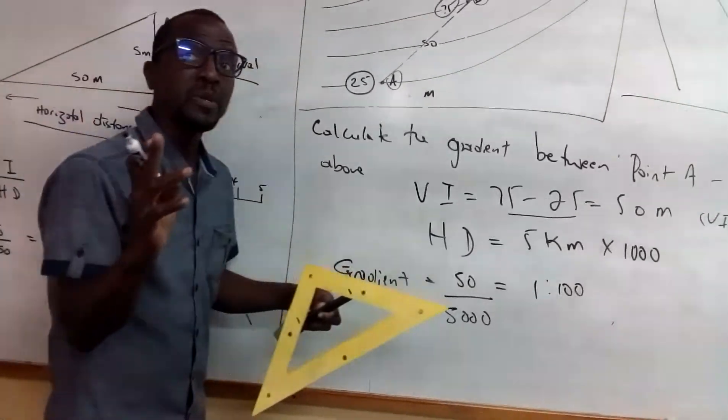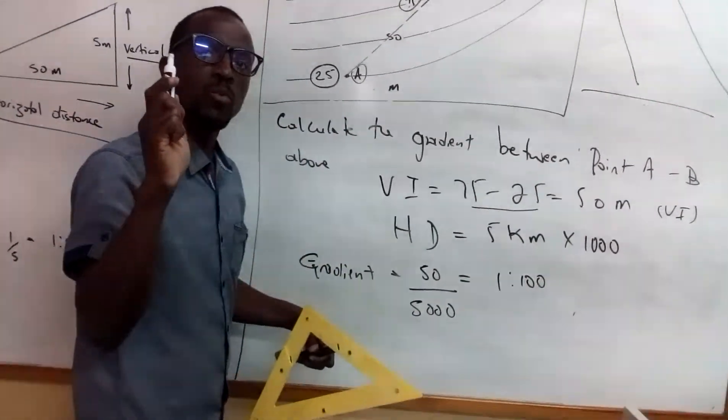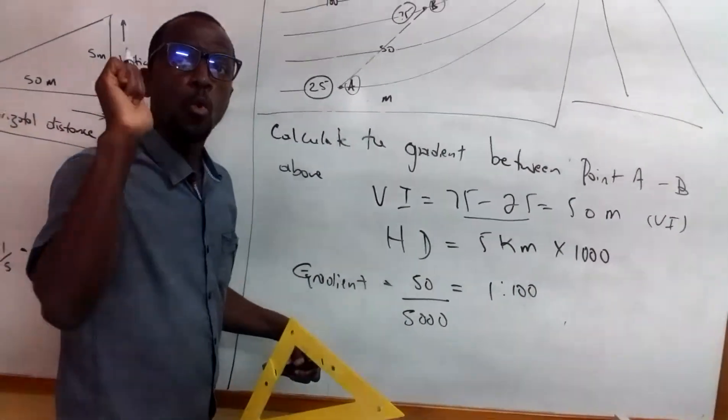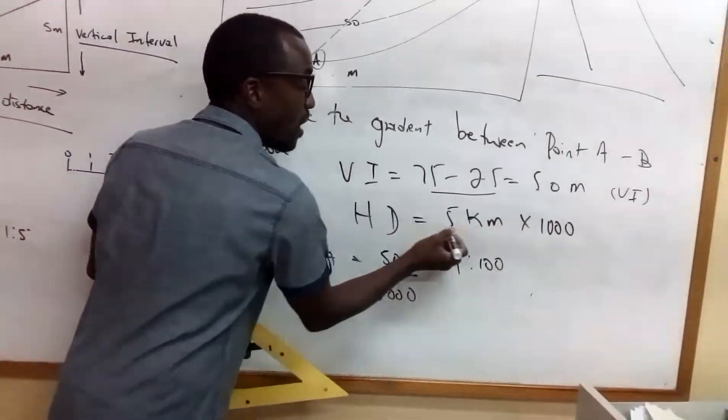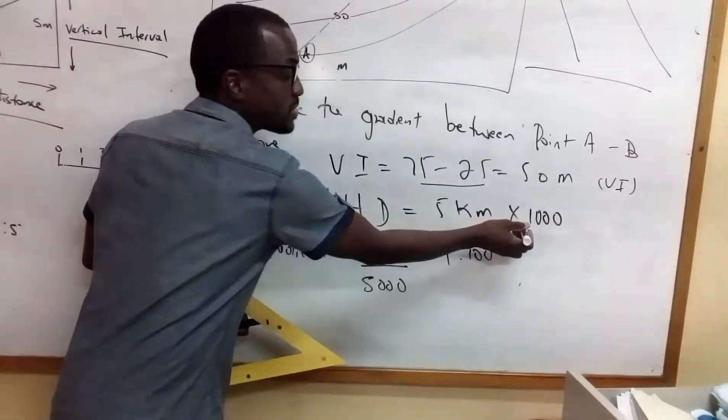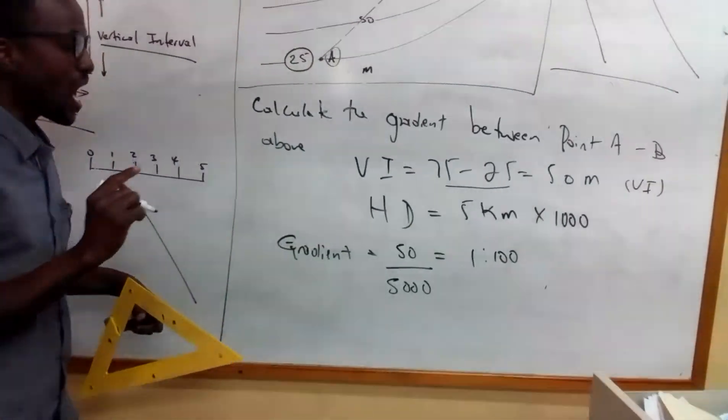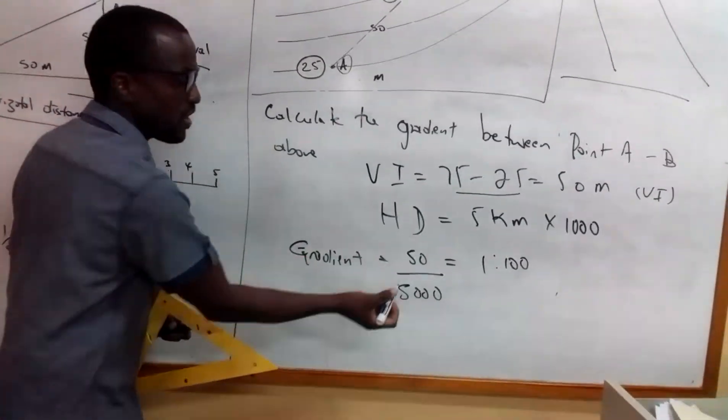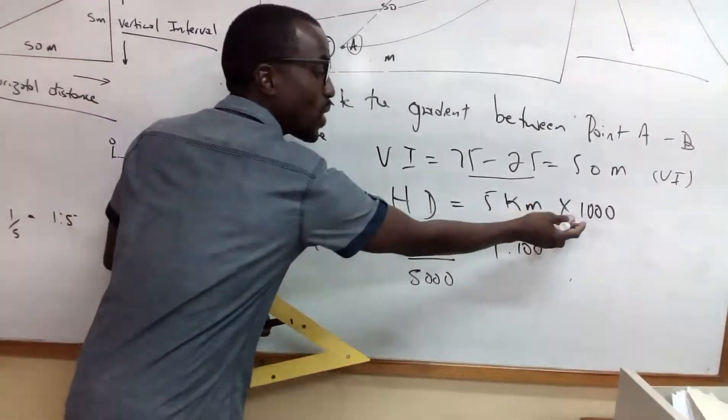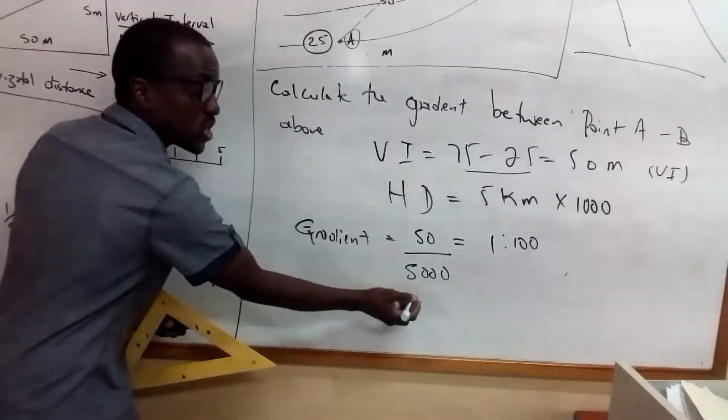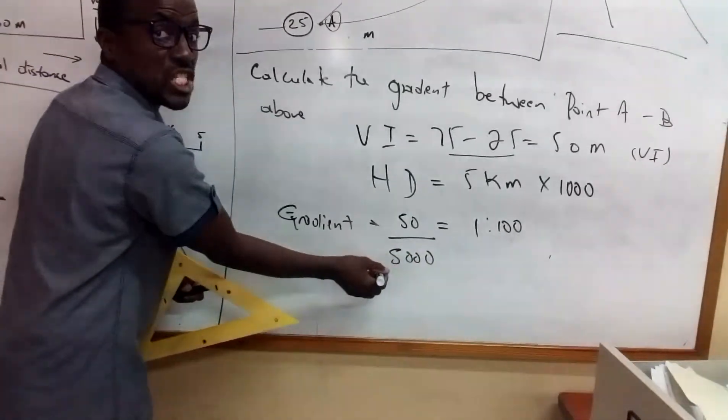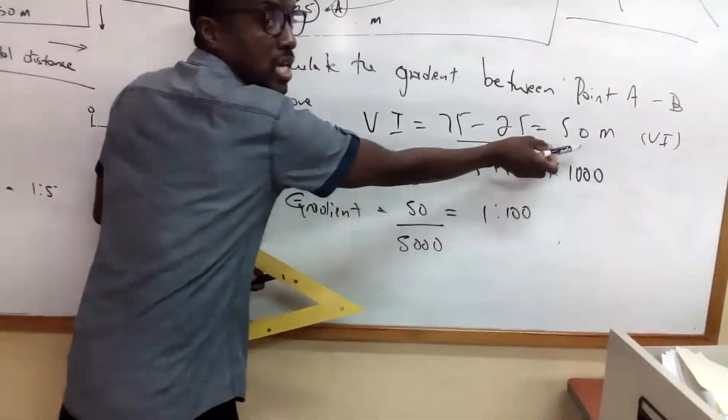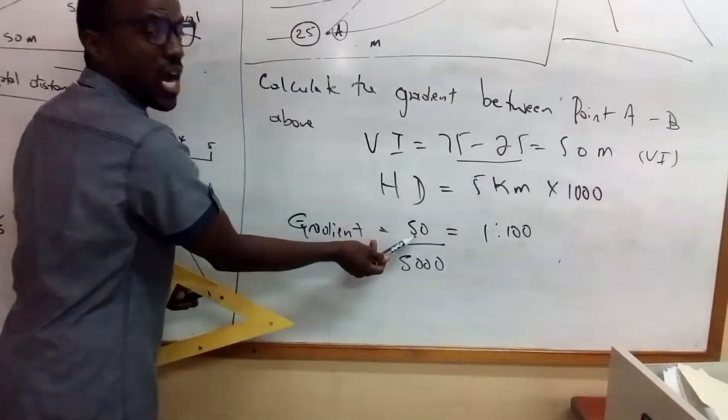So here what I am going to be doing, because one thousand meters gives you one kilometer, I am going to times the five kilometers times a thousand, so I am going to get five thousand. So therefore, five times one thousand gives you five thousand, which is here. So this five thousand is the HD and the 50 which I calculated here would be the VI.